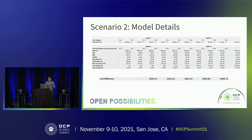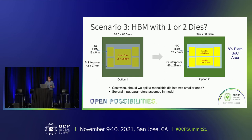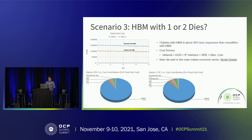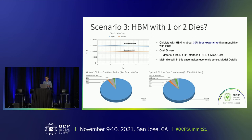Scenario three involves four HBMs mounted on an interposer with a die — we split the middle die in half. The output is similar, but KGD becomes very important because you're doing an interposer with many components. The third key variable is IP interface cost: using a cheaper or open-source interface — like Open HBI or other wire-based options — might lower cost and reduce sensitivity to marketplace uncertainty.